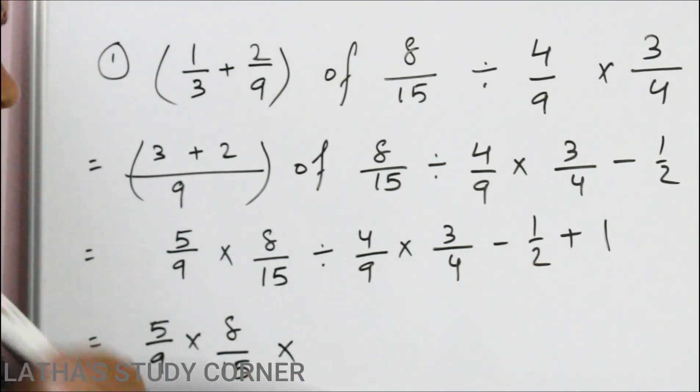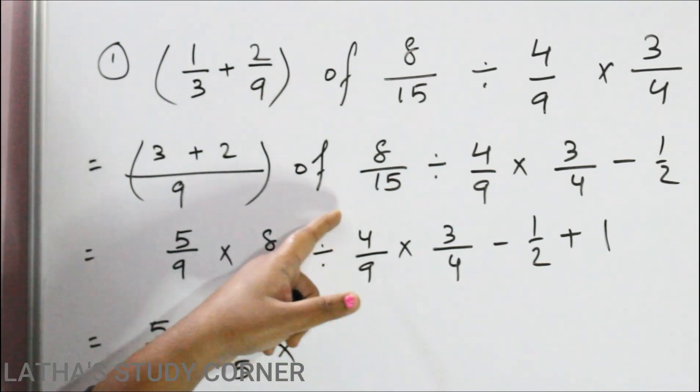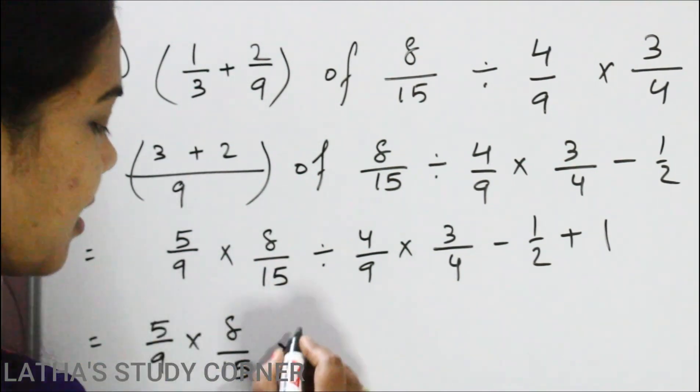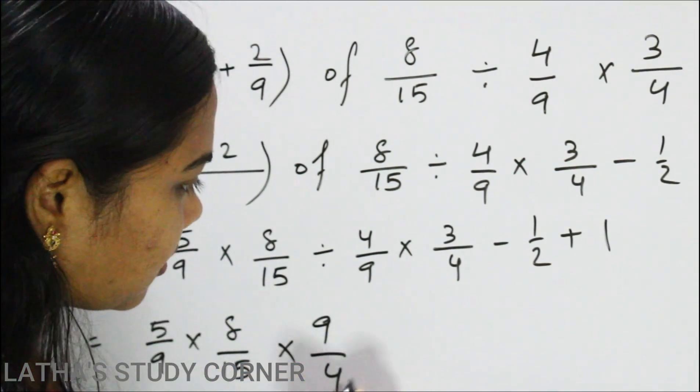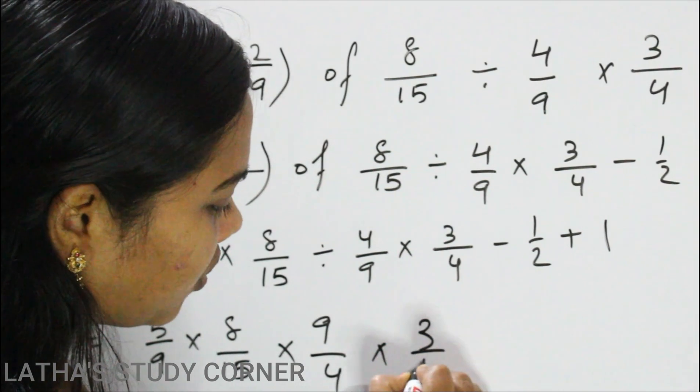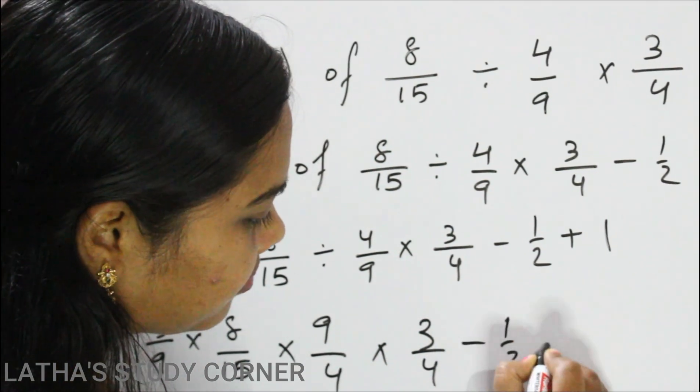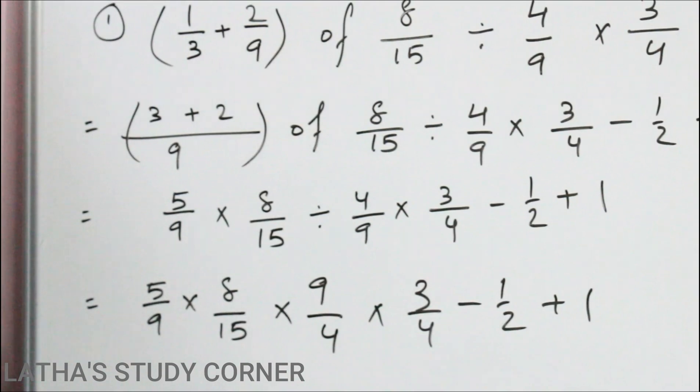into will come and the reciprocal of that fraction means reciprocal of 4 by 9 is 9 by 4 into 3 by 4 minus half plus 1. So now we have to solve it.